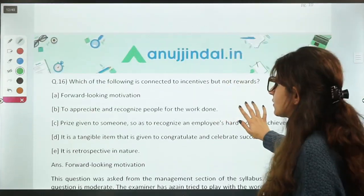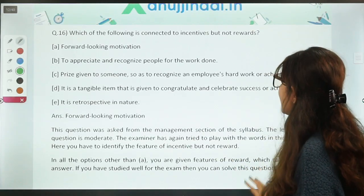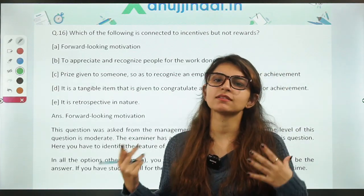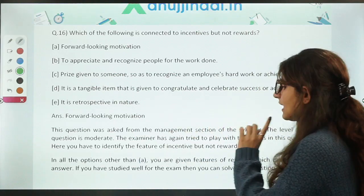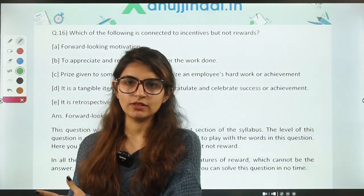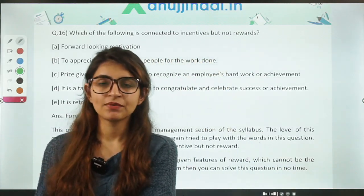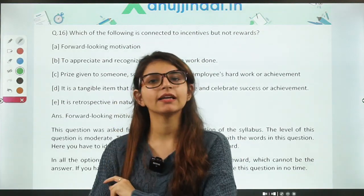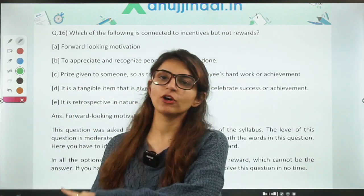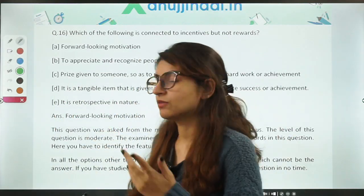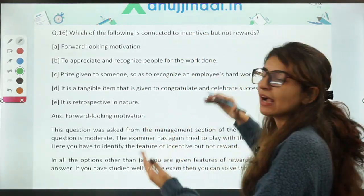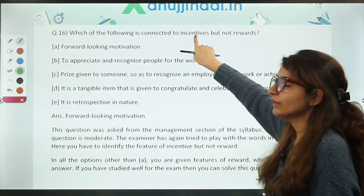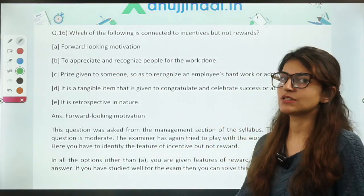Which of the following is connected to incentives but not to rewards? Incentives and rewards can seem like overlapping concepts. Incentives are given by the organization to employees to increase performance — they are forward-looking. Rewards are given when there is an increase in performance — they are backward-looking, based on what was already achieved. The correct option is: forward-looking motivation is concerned with incentive and not reward. A basic management concept.